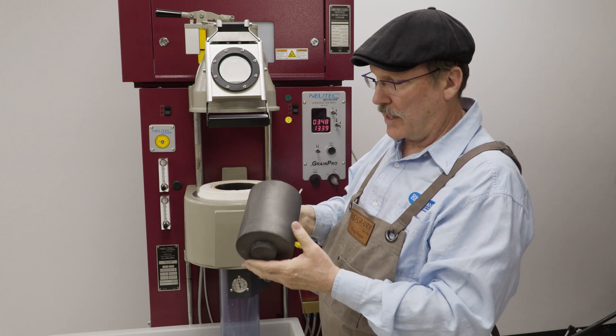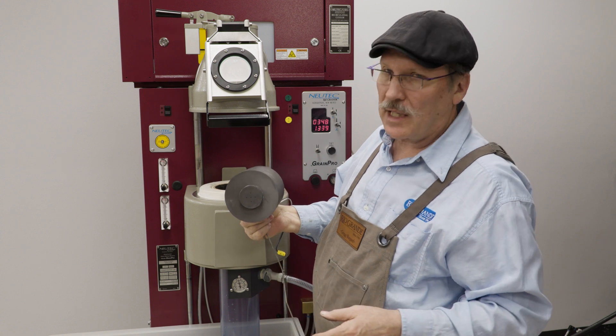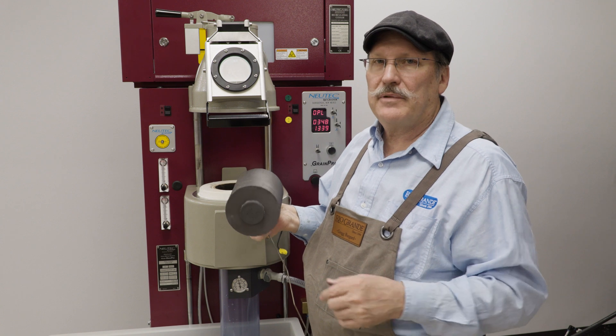Also on the continuous graining, you'll notice that the crucible has five holes in the bottom. On the single batch, it's got three holes. So that's a big difference.